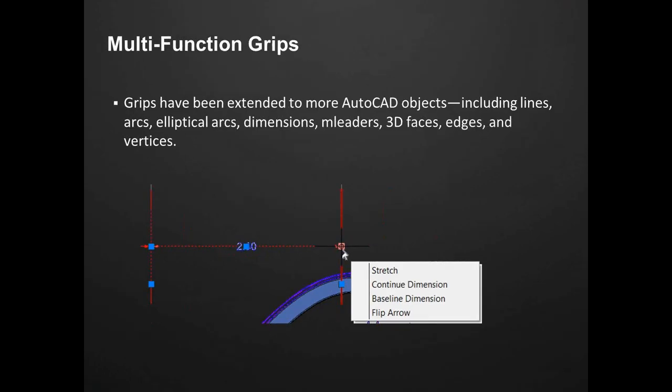Multifunction grips: we've seen this in past versions with polylines, for example, where you could grab a polyline and it had multifunction grips. Those multifunction grips have been extended to different objects like your lines, arcs, M-leaders, edges, vertices, and dimensions. As you see here, it's just a dimension that has multiple grips, and each one of those grips can now have multiple options — continuing dimensions, flipping arrows, and so forth.